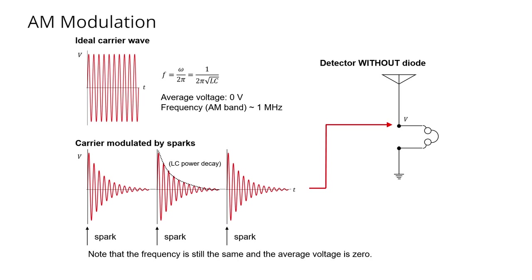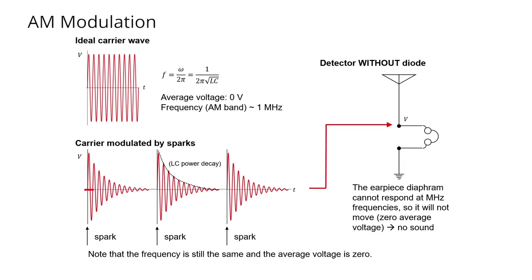And if we look at the signal, and I ask you, what is the average voltage of that signal? What is the time average voltage of the signal? The answer is zero. It's a flat line. So a flat line at zero is what the headphones see. The diaphragm doesn't move at all, and you can't hear anything out of the headphones. That's why the receiver doesn't work when you don't have the diode there.